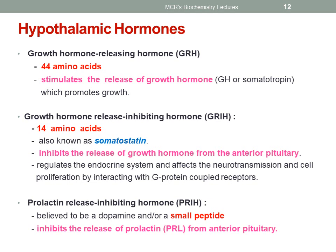Somatostatin regulates the endocrine system and affects neurotransmission and cell proliferation by interacting with G protein-coupled receptors. The prolactin release inhibitory hormone is believed to be dopamine or a small peptide, and it inhibits the release of prolactin from the anterior pituitary.